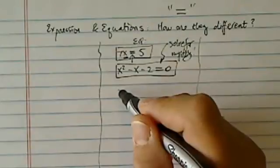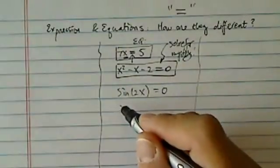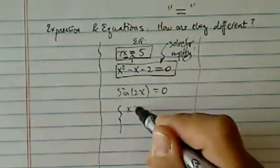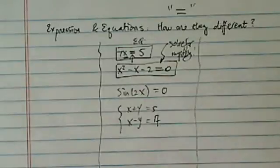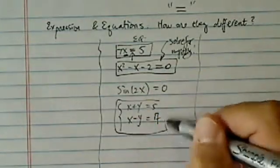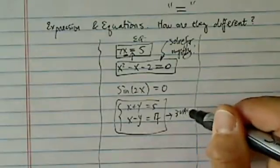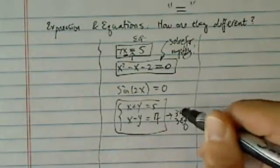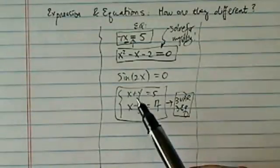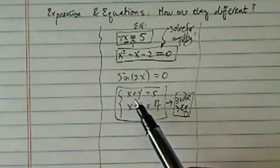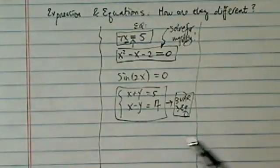Later on, you'll have maybe a trig equation, or system of two equations with two variables. But basically, it's still the same idea, and there's two mystery numbers to find. And you might have three variable, three equations, and maybe four variable, four equations. But the basic idea still stays the same, variable, and solve for the mystery number.